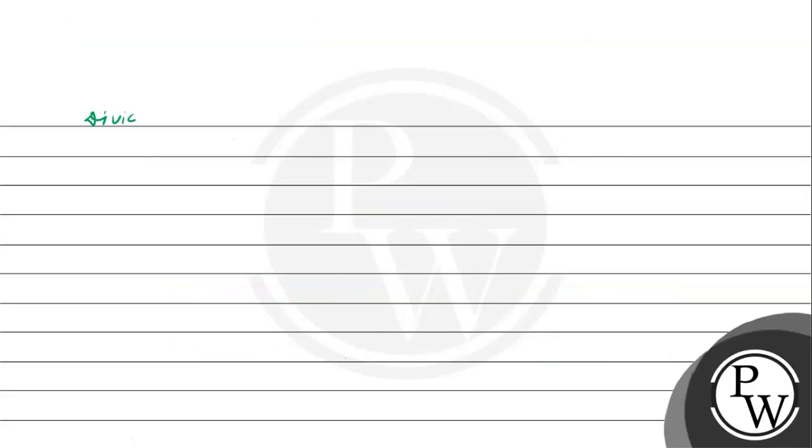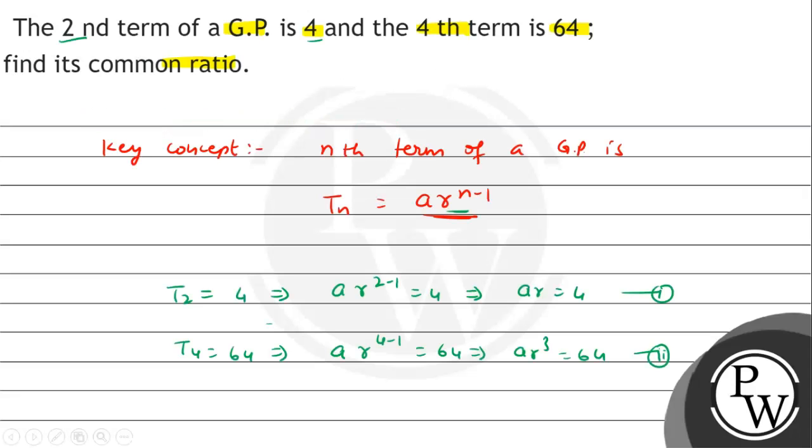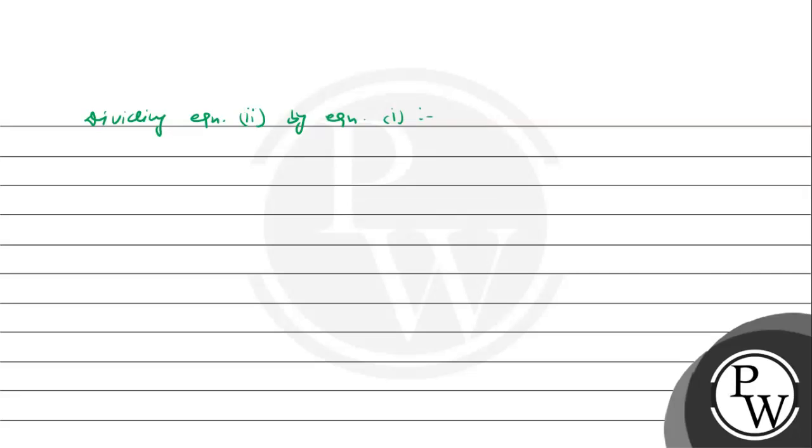Dividing equation 2 by equation 1: (ar^3)/(ar) = 64/4 = 16. The a's cancel, leaving r^2 = 16.